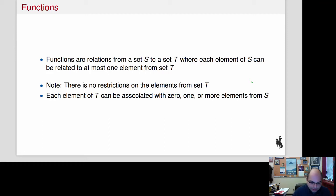So this is where we are. We've identified what a function is, and a function is a relation from some set S to a set T, because that's what relations do. And we have one condition: each element of S can be related to at most one element from T.